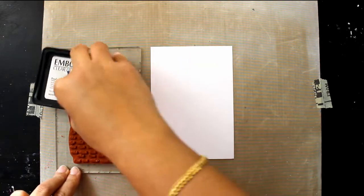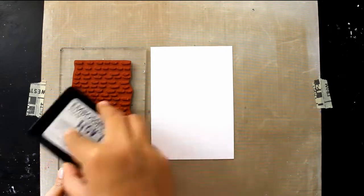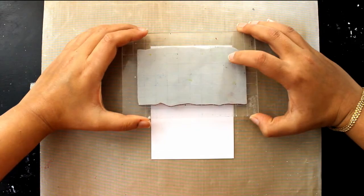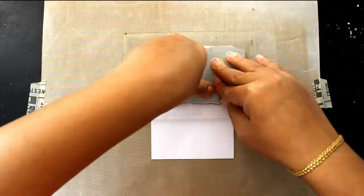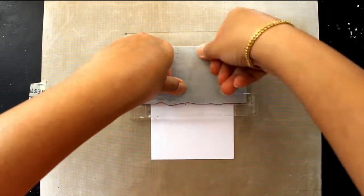I am inking up the running stamp from the embroidery set with some embossing ink from WOW Embossing Powder. I am stamping it down and I am going to cover the whole page.